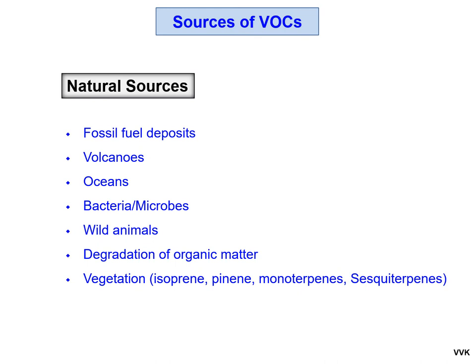VOCs are emitted into the atmosphere by both natural and anthropogenic sources. Natural sources of VOCs include emissions from fossil fuel deposits, volcanoes, oceans, bacteria, microbes, wild animals, degradation of organic matter, and vegetation. Vegetation produces compounds like isoprene, pinene, monoterpenes, etc. The emission of biogenic VOCs consisting of isoprene and monoterpenes accounts for almost 90% of total global VOC emission.